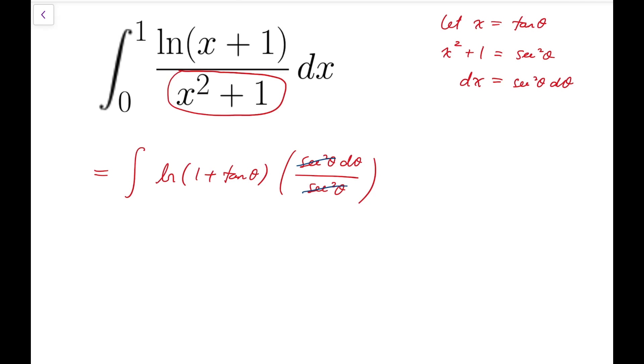Now for the limits, our original limits are 0 and 1. When x is 0, then theta is also 0, because tangent 0 equals 0. When x equals 1, then theta is pi over 4. So our integral becomes integrating natural log of 1 plus tangent theta d theta from theta equals 0 to pi over 4. This is the first step to remove the denominator.